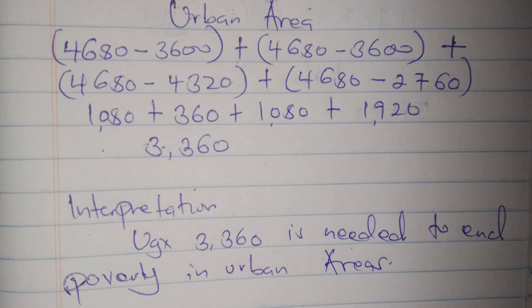The interpretation would be that amount 3,360 is needed to end poverty in urban areas. And then you do the same thing for rural areas.